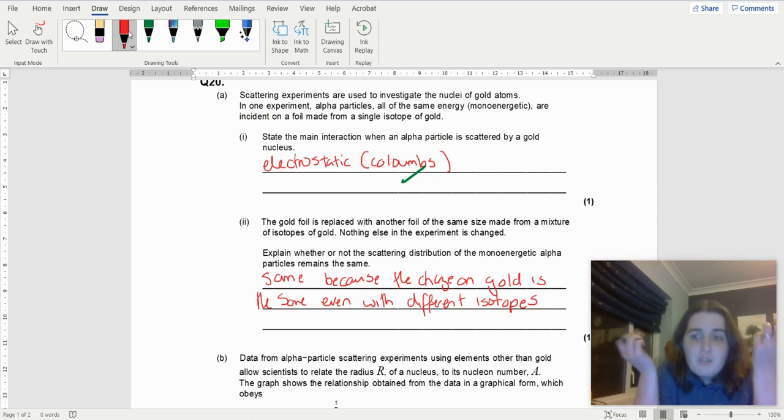Therefore, the repulsion is going to be exactly the same. And therefore, you're still going to get exactly the same scattering amount because the potential is the same.